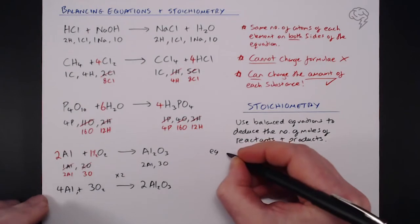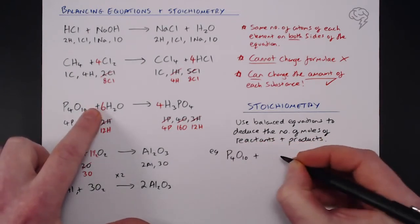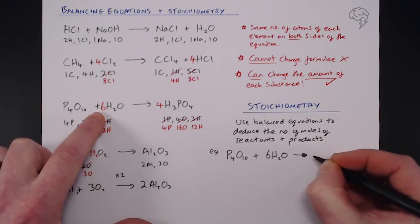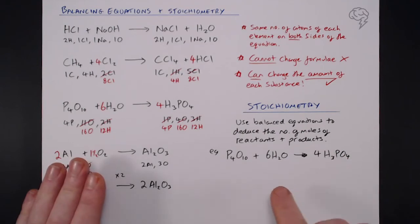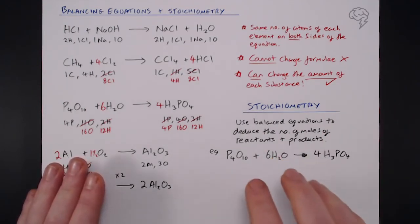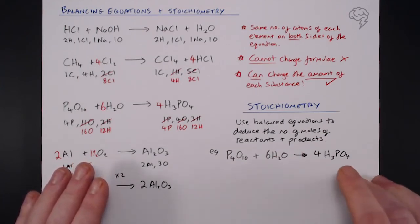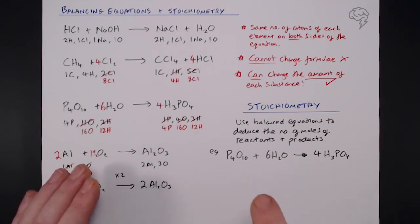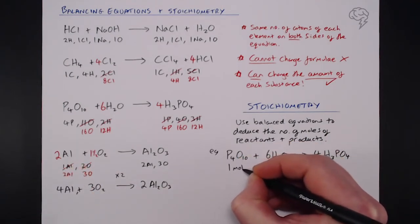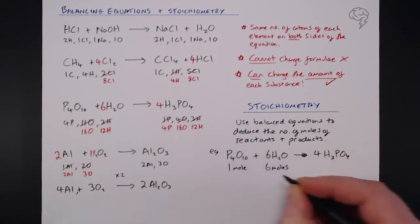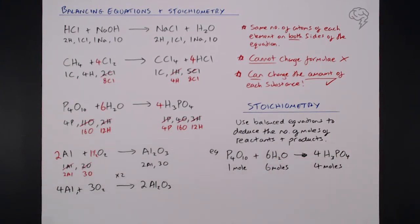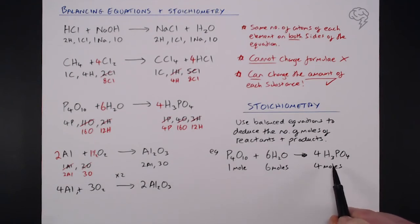Let's take the phosphoric acid equation to show what I mean. The balanced equation is: P4O10 plus 6H2O gives 4H3PO4. If you know the number of moles of one substance in an equation — reactant or product — and you have a balanced equation, you know the number of moles of everything else. This means 1 mole of P4O10 reacts with 6 moles of water to give 4 moles of H3PO4.